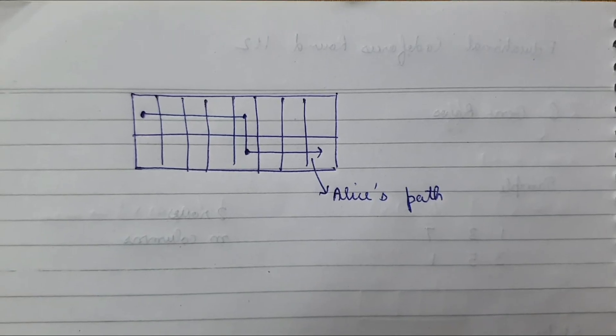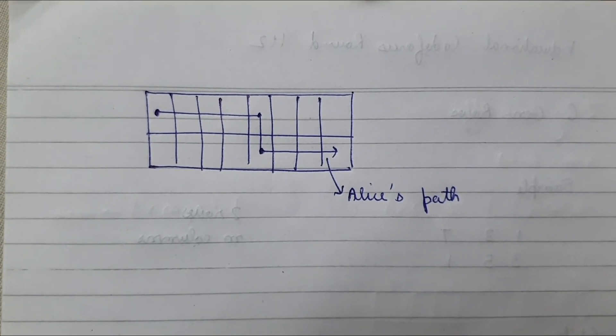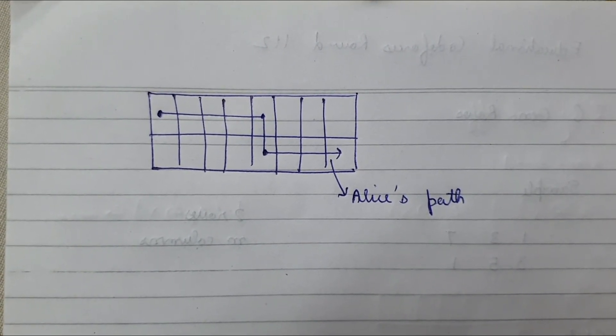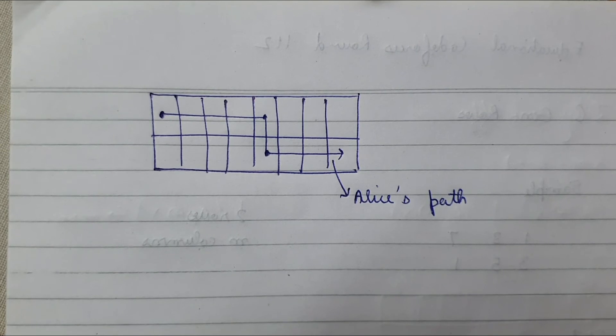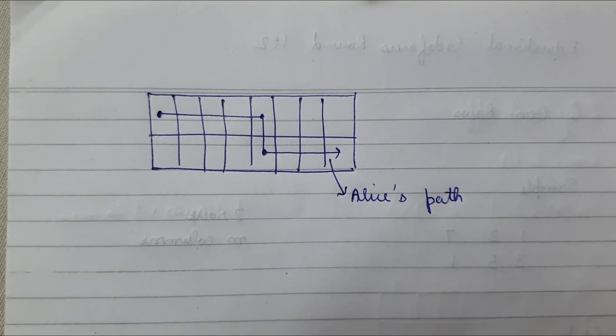Now let's see the explanation. Consider the following path that Alice chooses to go to the last column. Bob has two options: Bob can either go down before the column Alice has chosen, or he can go after that.